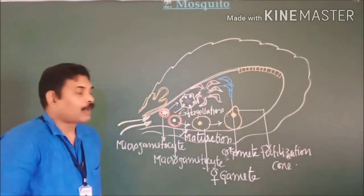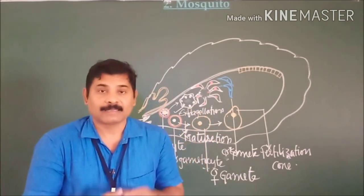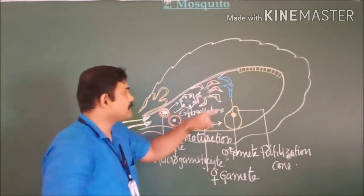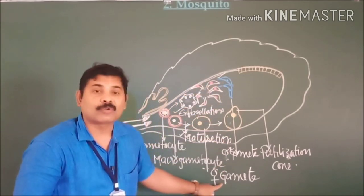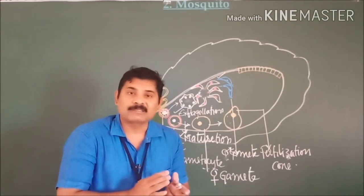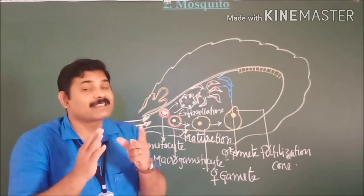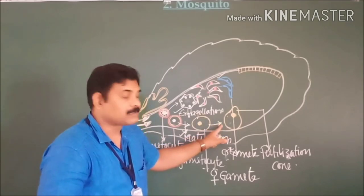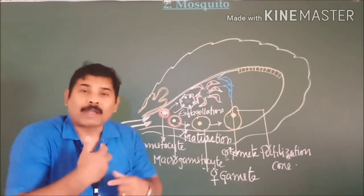At the end of this process, one specialized cell — the male gamete — and another — the female gamete — are produced. The formation of gametes, or formation of male and female gametes, is known as gametogamy. This is the first stage of the sexual reproduction cycle of Plasmodium in the mosquito.